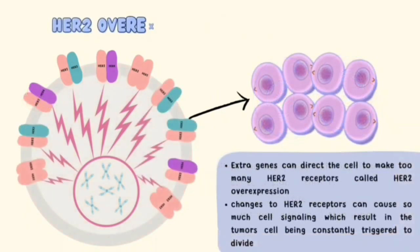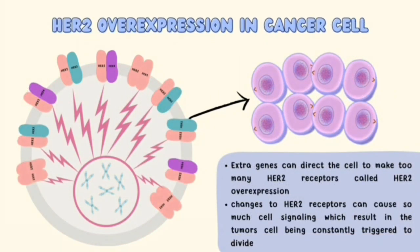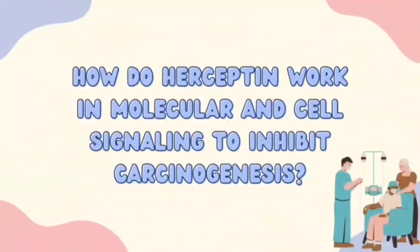However, in cancer cells, they sometimes have extra copies of the HER2 gene, known as HER2 gene amplification. These extra genes can direct the cell to make too many HER2 receptors, called HER2 overexpression. These changes to HER2 receptors can cause so much cell signaling, which results in the tumor cell being constantly triggered to divide. This uncontrolled cell division can cause tumor growth. However, there are drugs that target HER2 receptors that can stop cancer cells from dividing.